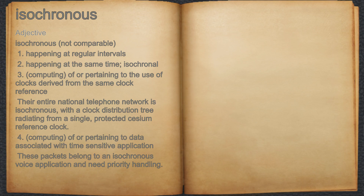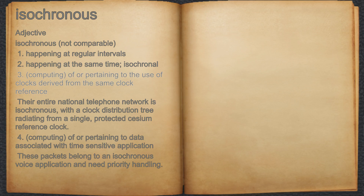Isochronous. Adjective. 1. Happening at regular intervals. 2. Happening at the same time; isochronal.